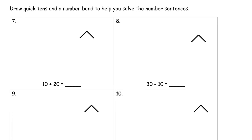Draw quick tens and a number bond to help you solve the number sentences. So I'm going to draw quick tens. So here's 10 plus 20. So I need a 10, and then I need two more tens for 10, 20, right? So together, that's going to be 10, 20, 30. It equals 30. So 30 is our whole. And our parts are 10 and 20. And, is that what we had to do? Drew quick tens, did it. Number bond, finished. And we've solved the number sentence. So that's everything we have to do for these.